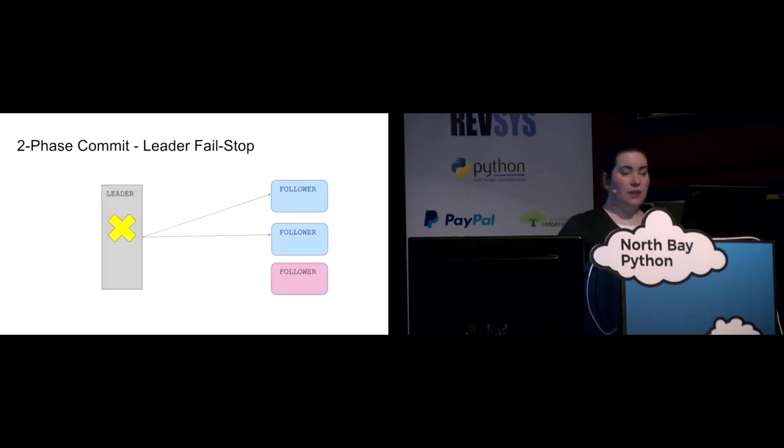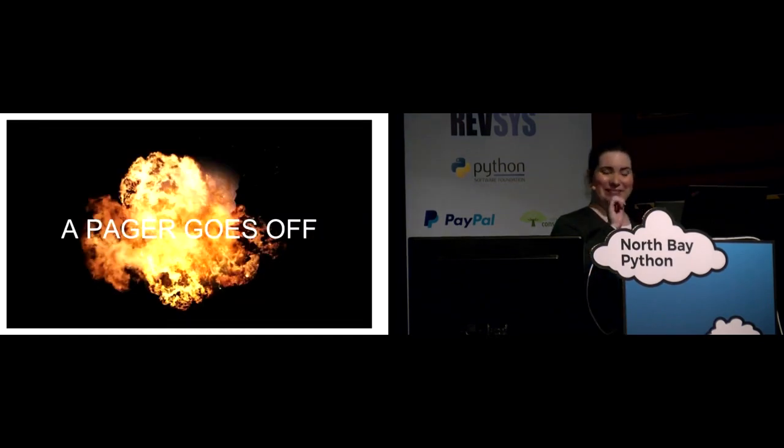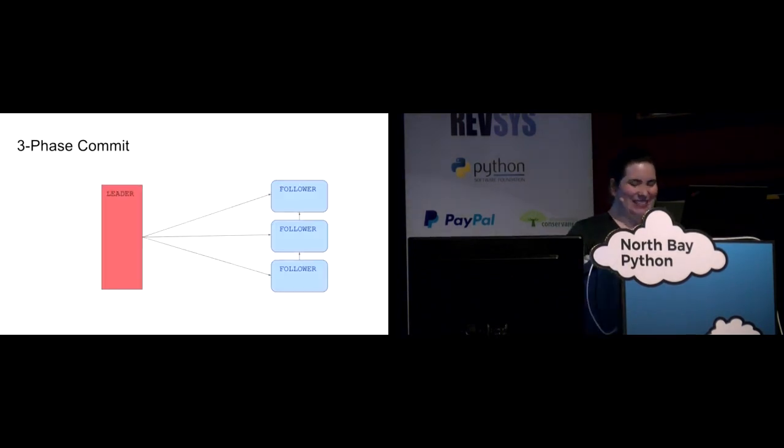However, if the leader stops and fails while sending a commit message to its followers, some of the followers receive it. Some don't. The followers' logs no longer match. And it's 3 a.m. on a Sunday. And guess what?